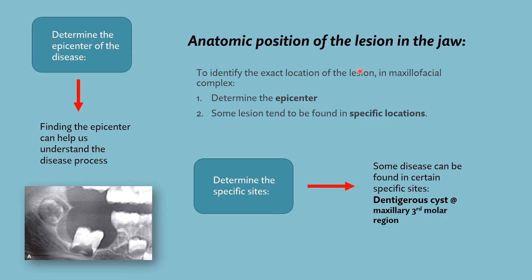Regarding anatomic position of the lesion in the jaw — to identify the exact location in the maxillofacial complex, we should determine the epicenter of the lesion. Determining the epicenter will help us find the disease process, as some lesions tend to be found in specific locations. Finding the epicenter can help differentiate between various types of lesions. For example, a dentigerous cyst usually occurs in the maxillary third molar region, so we can diagnose it by understanding its location and epicenter.